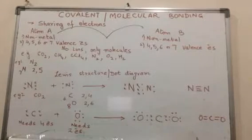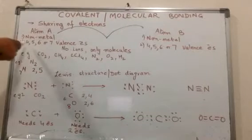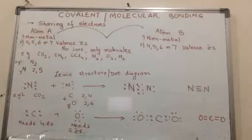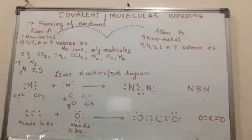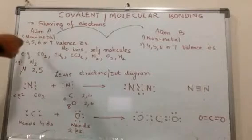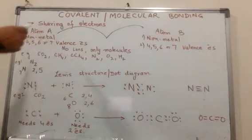They cannot give away more than three electrons, and they cannot take more than three electrons because that will make them highly unstable. So if you have a scenario where there are two non-metal atoms,